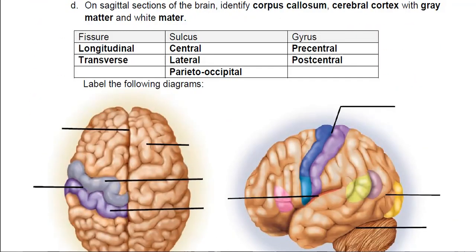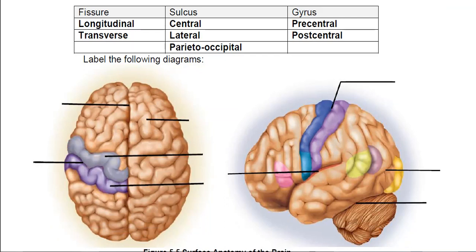Moving on to the cerebrum itself. Most of our diagrams are color coded — real brains aren't. If you find a picture of a real brain or see the actual human brain at open lab, it won't look nearly as neat. On a lab exam, if I'm asking about a specific part of the brain, it's most likely going to be colored.